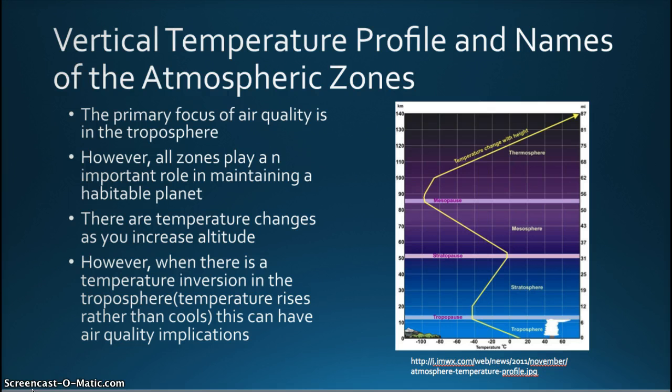The troposphere is the layer nearest the Earth, and of great interest to air quality studies. It extends about 6 miles upward, although this height varies depending on where it is measured on the Earth between the poles and the equator.